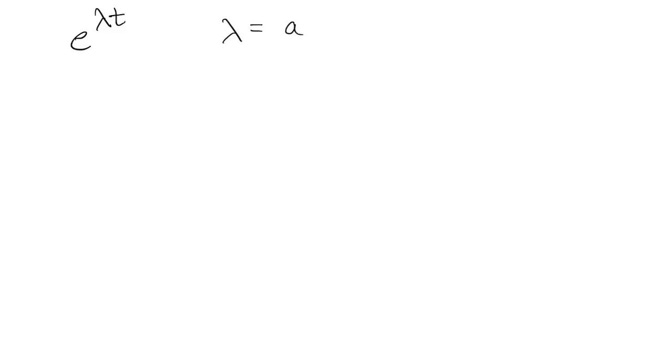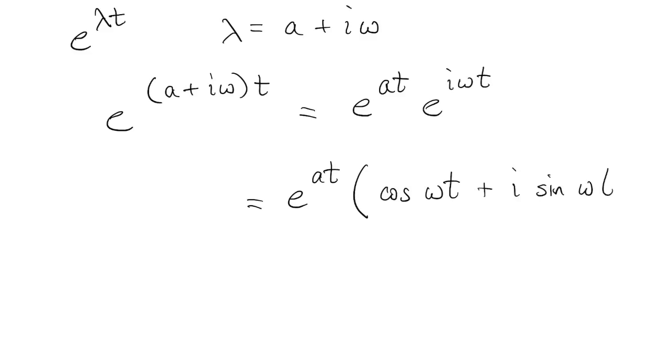Now we're ready to talk about e to the λt, where λ might be a complex eigenvalue. So we'll write λ in terms of its real and imaginary parts. And then this is still an exponential function, even with complex arguments, we can break it up into the product of two exponentials. The first part is purely real, and the second part is e to the imaginary, so that's just Euler's formula.